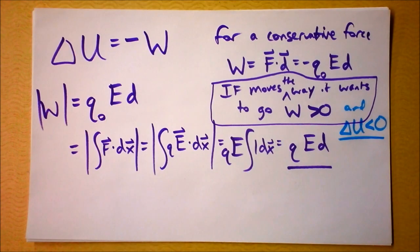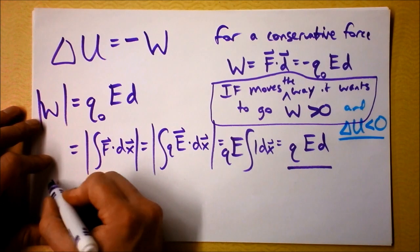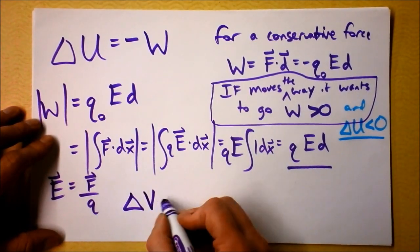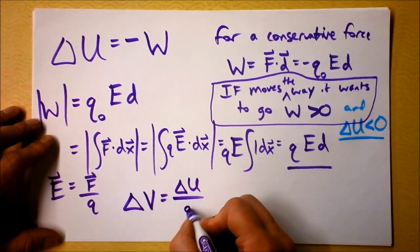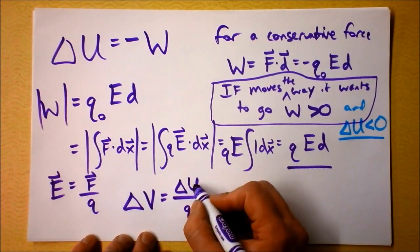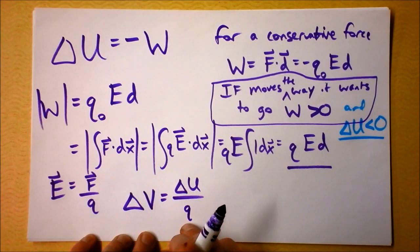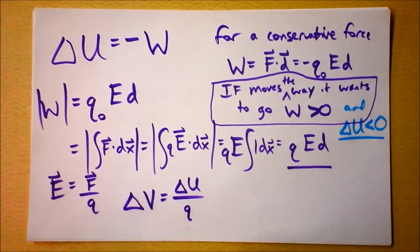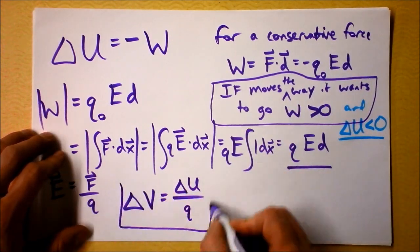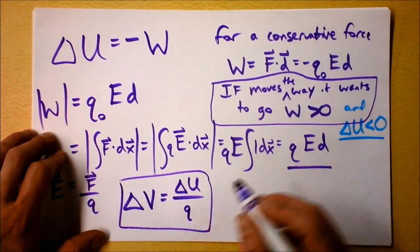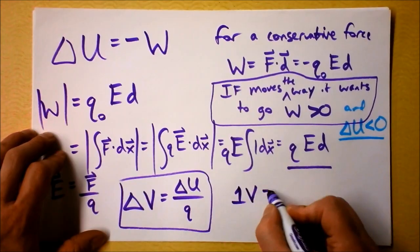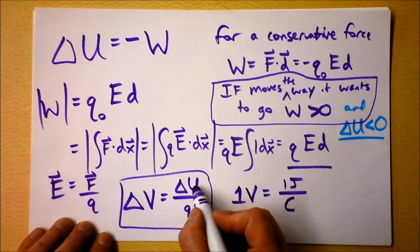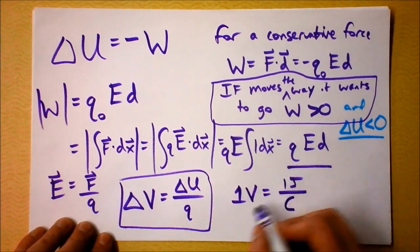Just like the electric field is force divided by charge, the change in electric potential is ΔU divided by charge. If the potential energy of a situation has changed a lot but the charge is small, then we've gone through a very big voltage. Voltage is electric potential. The units of a volt are one joule per coulomb — because we've got units of energy divided by units of charge.